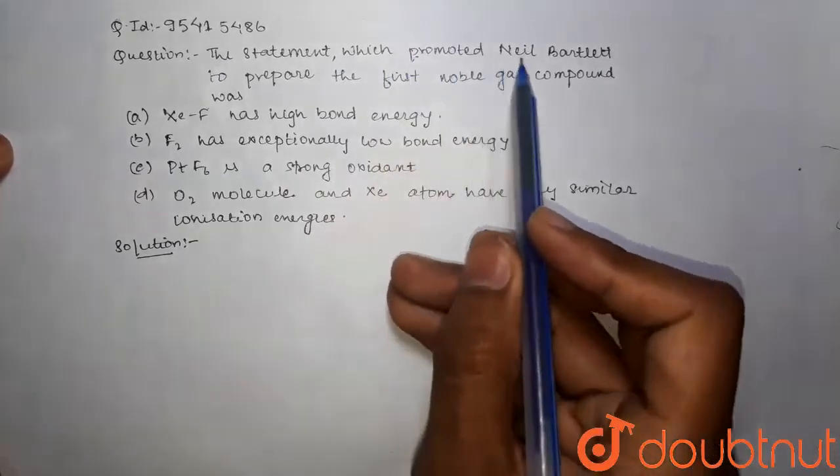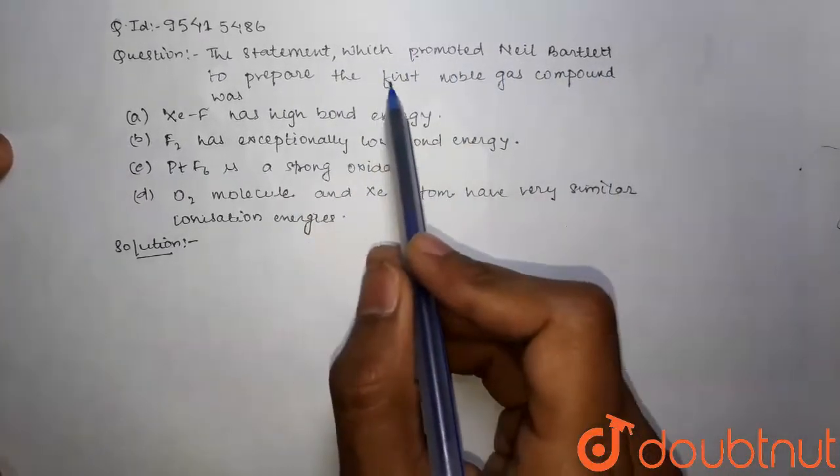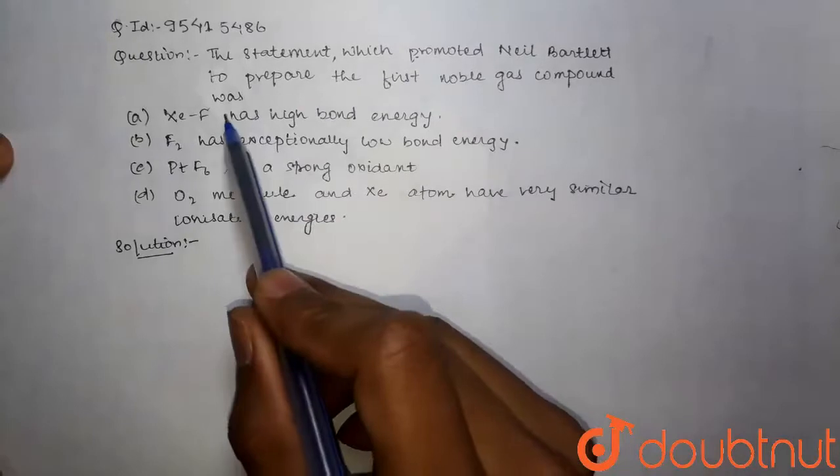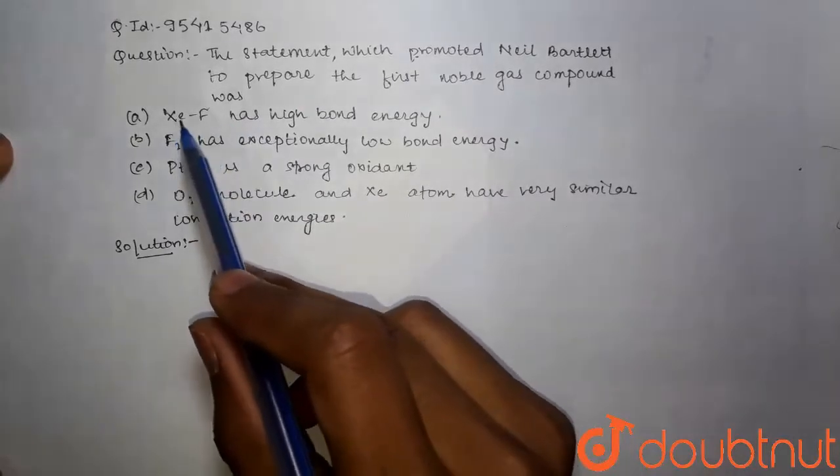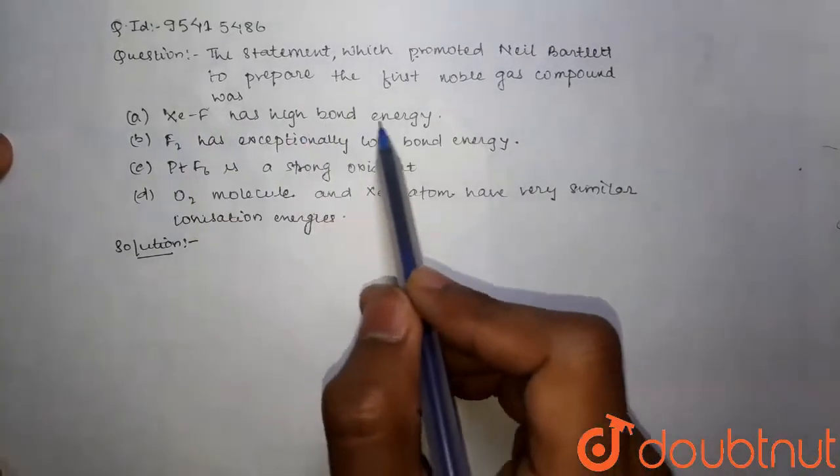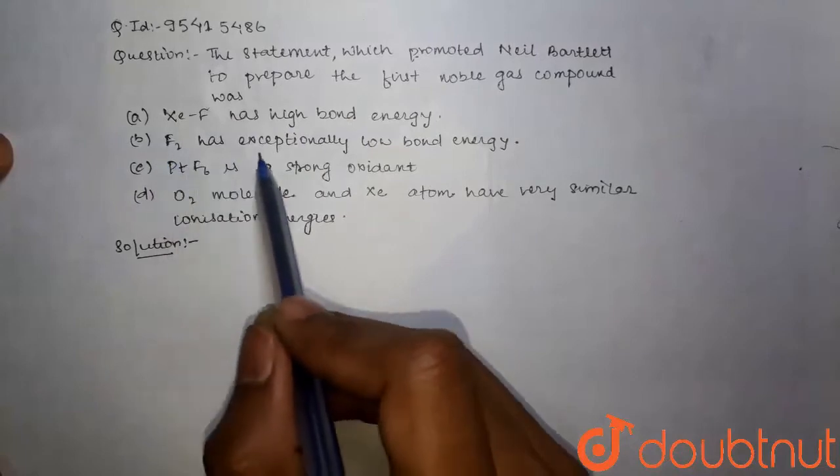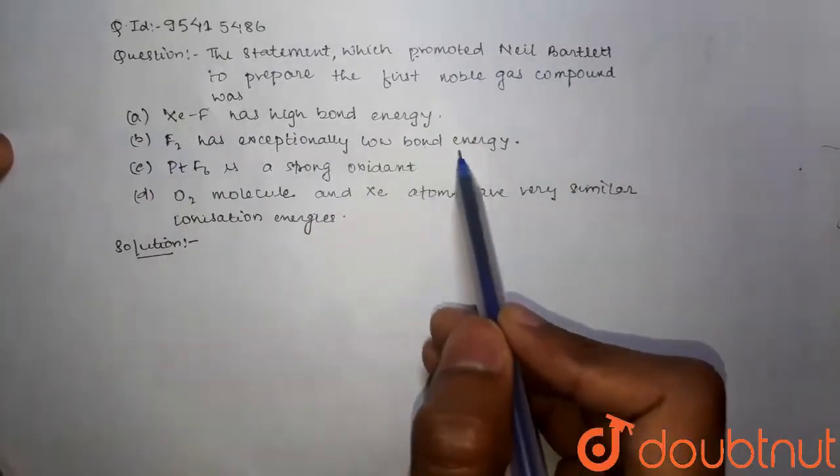The statement which promoted Neil Bartlett to prepare the first noble gas compound was: Option A is XEF has high bond energy. Option B is F2 has exceptionally low bond energy.